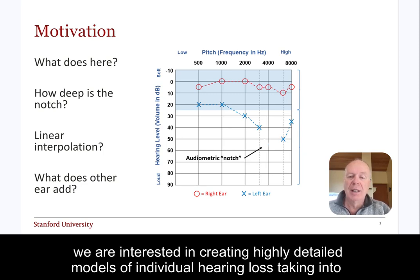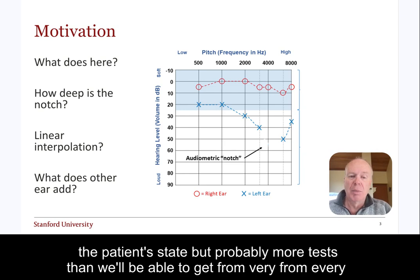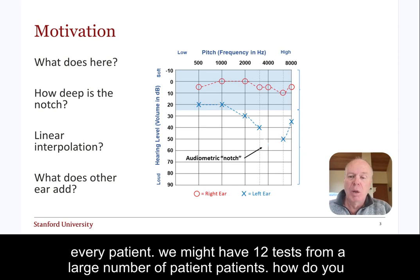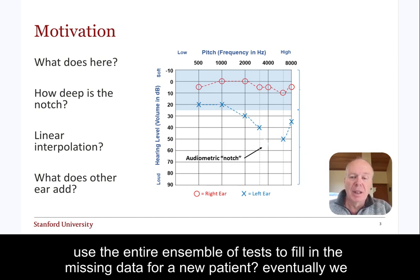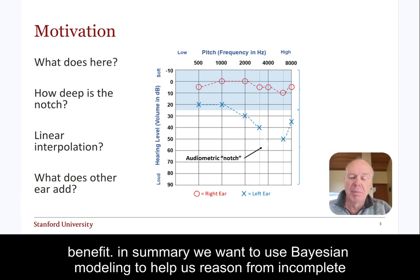We are interested in creating highly detailed models of individual hearing loss, taking into account both peripheral and central issues. There are many tests we can use to describe the patient state, but probably more tests than we'll be able to get from every patient. We might have 12 tests from a large number of patients. How do you use the entire ensemble of tests to fill in the missing data for a new patient? Eventually, we want to reason about which tests we should perform next to get the best diagnostic benefit. In summary, we want to use Bayesian modeling to help us reason from incomplete data.